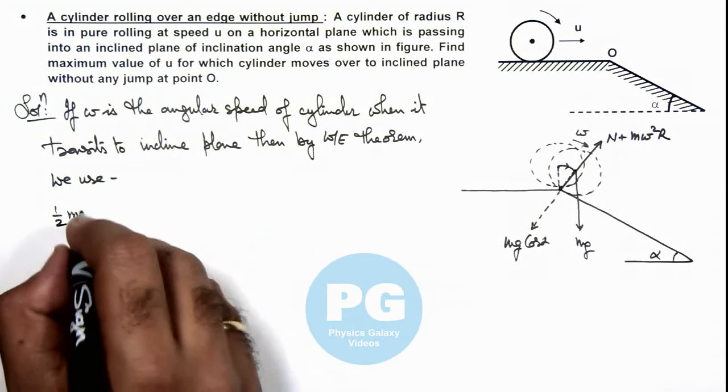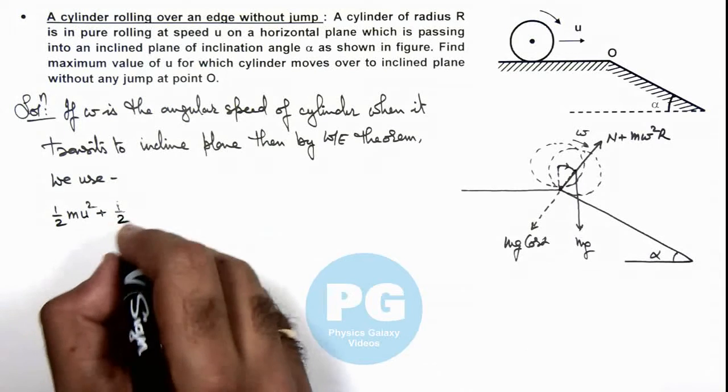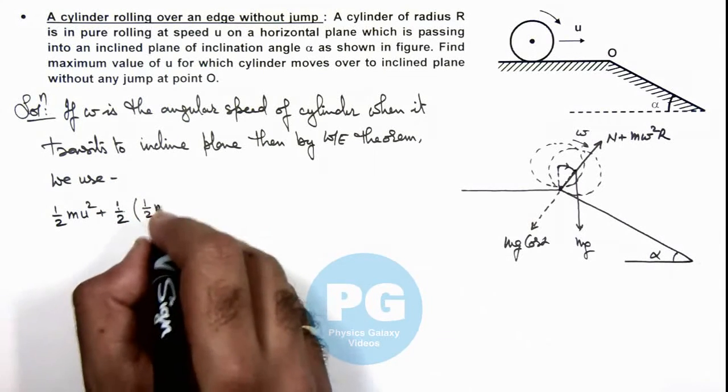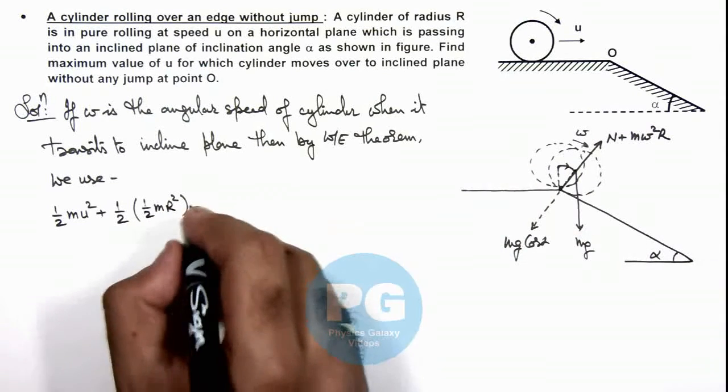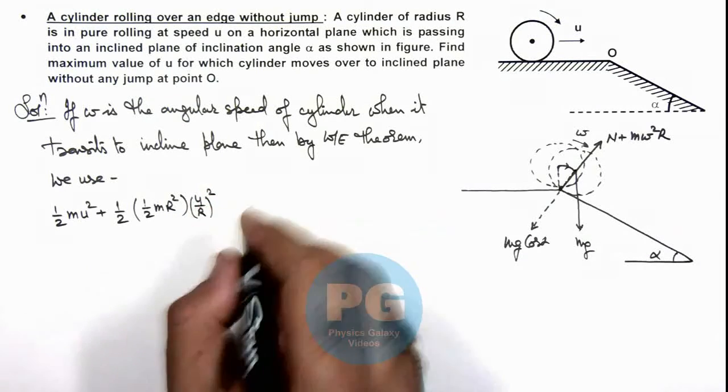Half m u squared plus, this is half I omega squared, and the value of I we can write as half m R squared, multiplied by the initial angular speed for pure rolling we can write as u by R whole squared.